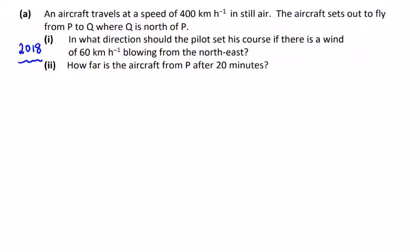Relative velocity 2018 question 2 part A. An aircraft travels at a speed of 400 kilometers per hour in still air. The aircraft sets out to fly from P to Q where Q is north of P. So we have an aircraft that wants to go from here to here.